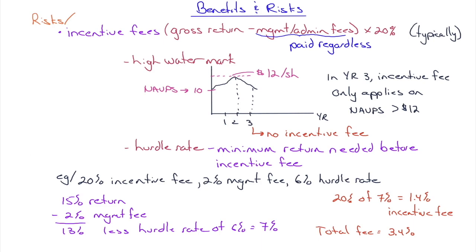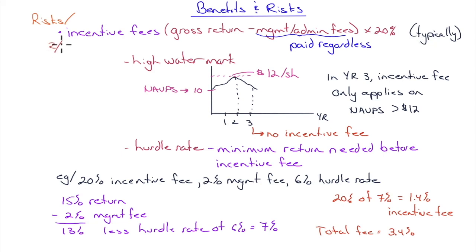Incentive fees can also be a risk. The incentive fee is the gross return minus any management or admin fees. If the return was 10% and the management fee was 2%, then 10 minus 2 is 8%, multiplied by 20% — that's the incentive fee. The hedge fund managers get 20% of the upside. These are typically called 'two and twenty' funds: 2% management fee and 20% incentive fee.